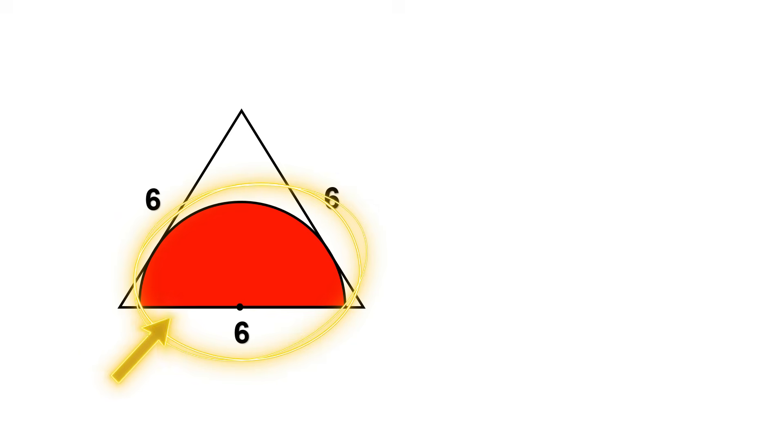and all three sides are six units long. Inside it, there's a red arc, a semicircle perfectly tangent to the two upper sides of the triangle. And the question is very simple. What is the area of the red region?